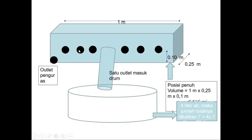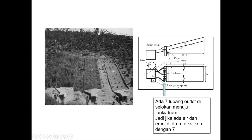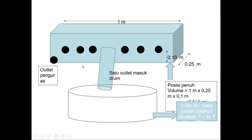Mencari korelasi antar peubah, karena ini adalah betul-betul white box, antar cover crop, hujan, tanah, kemudian infiltrasi, dan sebagainya. Ini gambarnya seperti ini, dari gambaran kasarnya, ini detailnya seperti ini. Jadi ini dilengkapi dengan outlet, jadi setelah tiap pagi diukur dan dibersihkan, lewat outlet dibuka. Ini satu outlet masuk ke dalam drum. Sehingga kalau ini posisi penuh, ini karena 0,25 meter, kemudian ini adalah sekitar 4 liter kalau ini penuh.